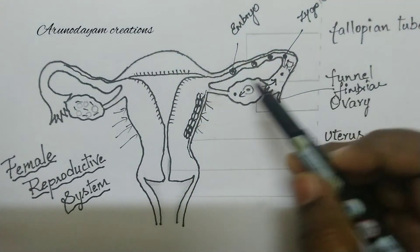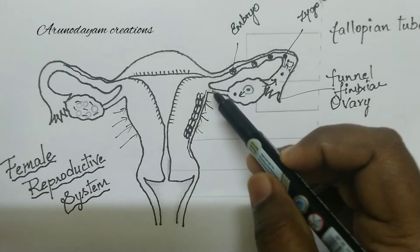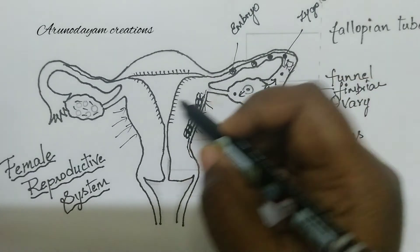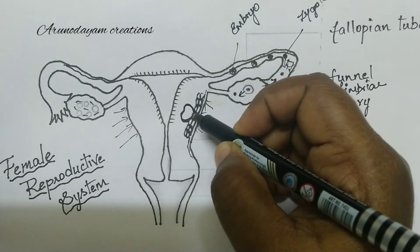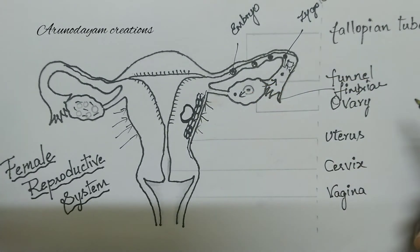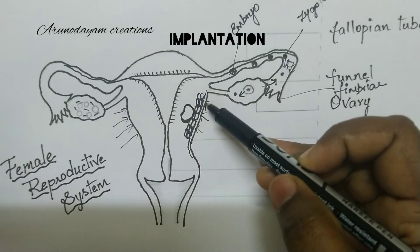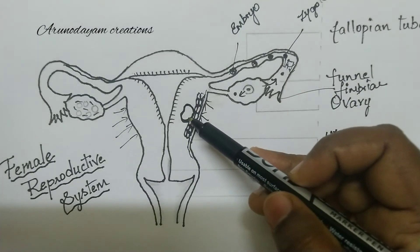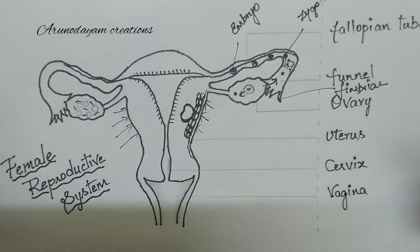Because of the movement of these fimbriae, the embryo will roll back and finally enter into the uterus. It will attach to the wall called the endometrium. This process is called implantation — the attachment of the embryo to the wall of the uterus is called implantation.